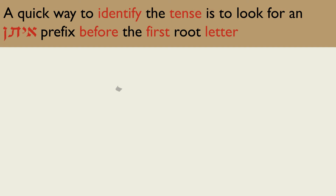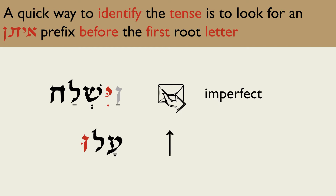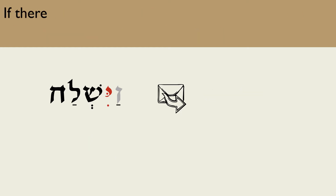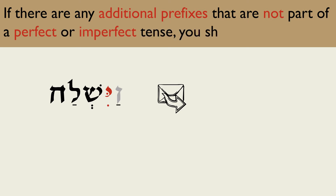The verb Vayeslach has an Eitan prefix Yud before the first root letter, so the tense is imperfect. If there are any additional prefixes that are not part of the perfect or imperfect tense, you should ignore them. In the word Vayeslach, the prefix Vav is Vav-conversive and is not part of the imperfect tense — it can be ignored.